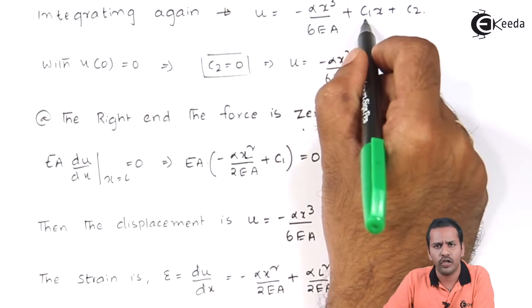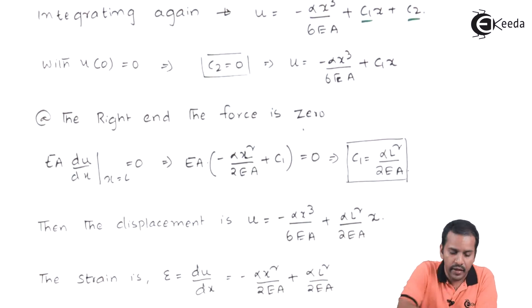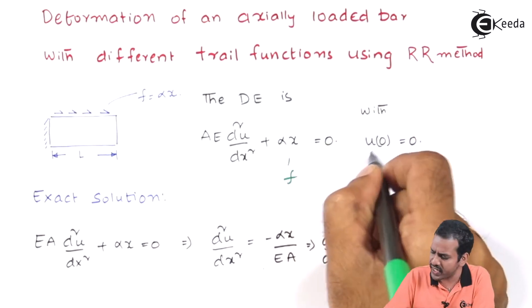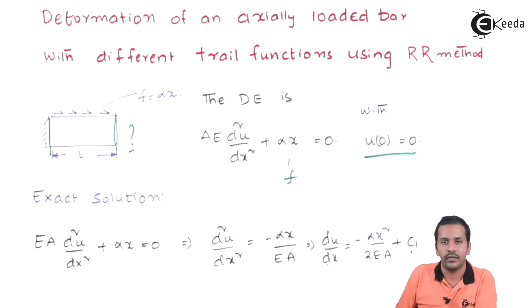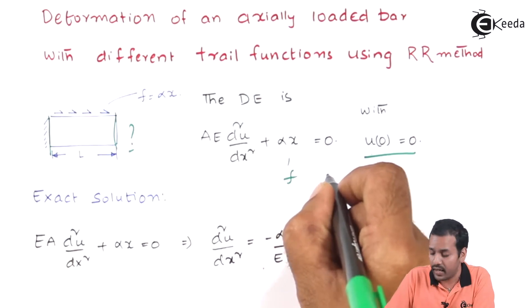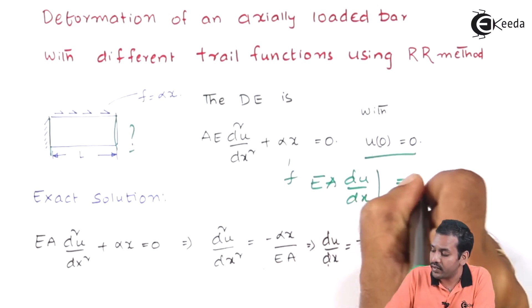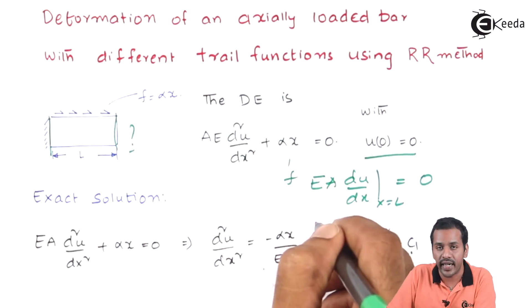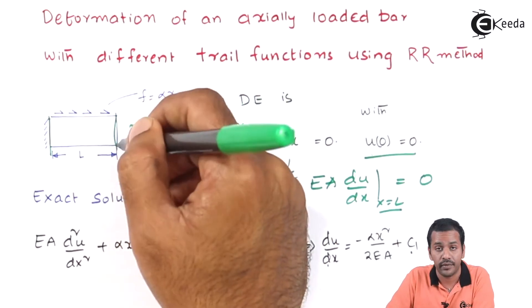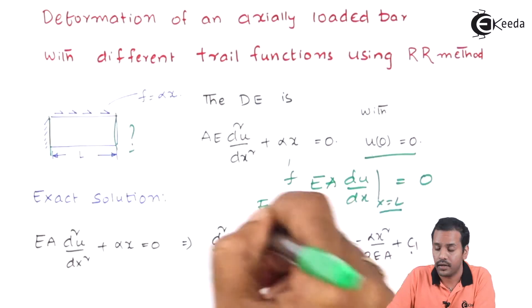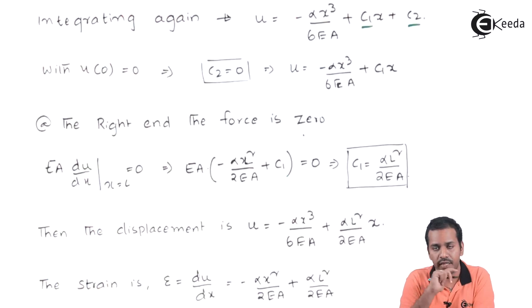We need to find constants C1 and C2, so we need two boundary conditions. We already have u(0) = 0 at the left hand. For the right hand, the boundary condition is EA times du/dx at x = L equals 0. This term indicates the force — at x = L we don't have any applied load, so the force is zero there.